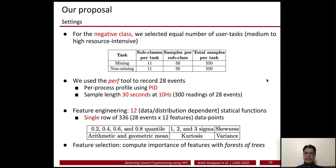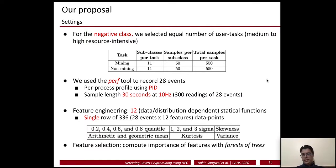In our experiments we used the perf tool to record those 28 events and create per-process profiles using PID. The sample length was 30 seconds at 10 Hz, meaning we record 300 readings of 28 events per sample. For feature engineering, we computed 12 data and distribution-dependent statistical functions, resulting in a single row of 336 data points per sample (12 features × 28 events). Those statistical functions are also shown in the table.